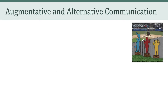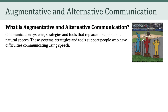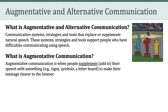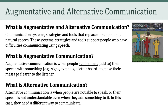What is meant by augmentative and alternative communication technologies? First, let's start by defining the category as communication systems, strategies, and tools that replace or supplement natural speech. These systems, strategies, and tools support people who have difficulties communicating using speech. Augmentative communication is when people supplement or add to their speech with something such as sign symbols or a letter board in order to make their message clearer for the listener. In contrast, alternative communication is for people who are not able to speak or whose speech is not understandable even when they add something to it — in these cases, they need a different way to communicate.